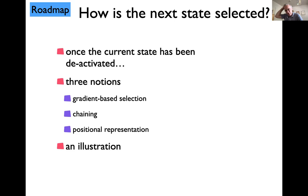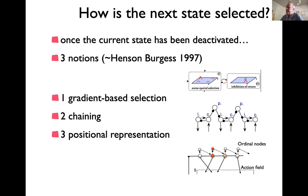The last point of this topic is what next state you then select and how that comes about. I want to refer to three notions from the literature — not original to us, but implementing them. There's a review article by Henson and Burgess. These three notions still seem to span the space of possibilities we know. One idea is gradient-based selection. The second is chaining. The third is positional. All three are used in our models.